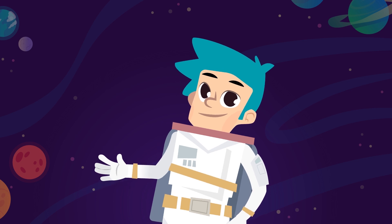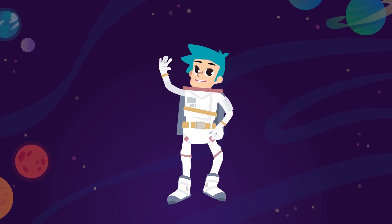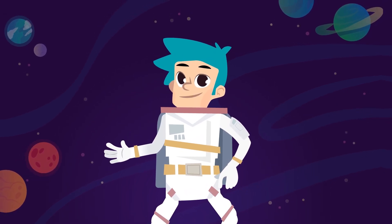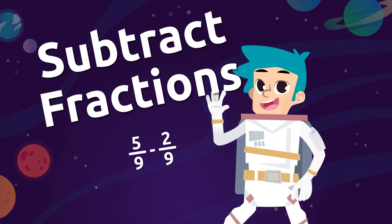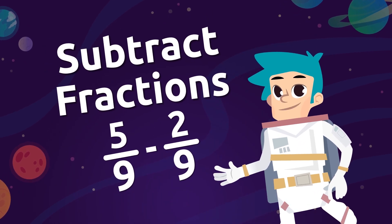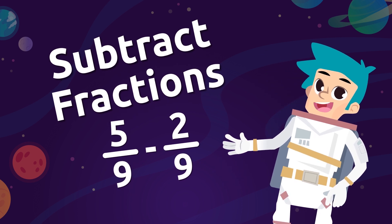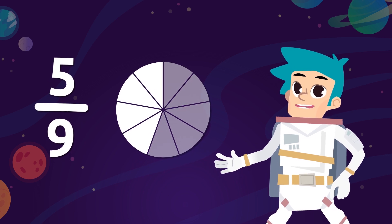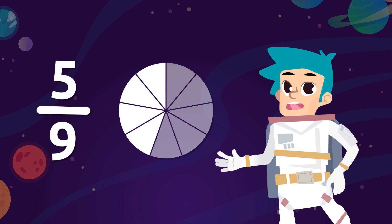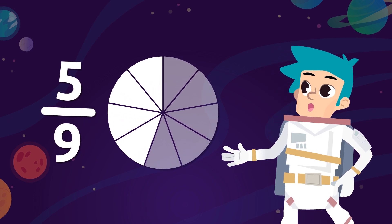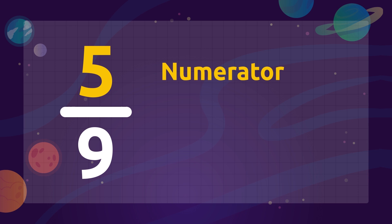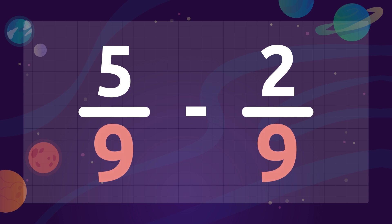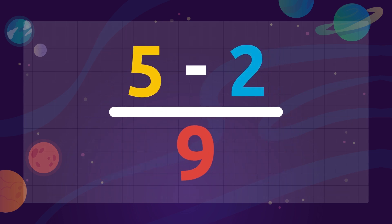Hello again, math friends! We're going to continue learning about fractions. Today we're going to learn how to subtract fractions with the same denominator. A fraction is a number which indicates the division of a whole number into equal parts. Let's remember the parts of a fraction: this is the numerator, and this number is the denominator. To subtract fractions with the same denominator, we leave the common denominator and only subtract the numerators.